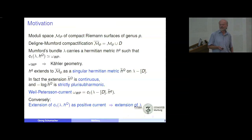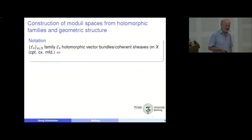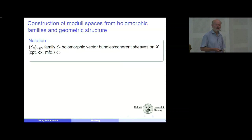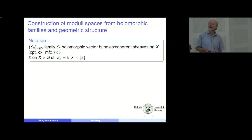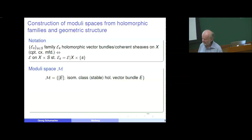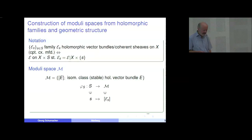Some notation for holomorphic vector bundles: since we are interested in Kähler geometry, we need to look at holomorphic families. A holomorphic family of holomorphic vector bundles parametrized by some parameter space S is given by a holomorphic vector bundle on the total space whose restrictions to fibers X × {s} are just the given members of our family. Set-theoretically, the moduli space consists of isomorphism classes of stable holomorphic vector bundles, and given any such family, we can assign to a point in the base the corresponding isomorphism class.